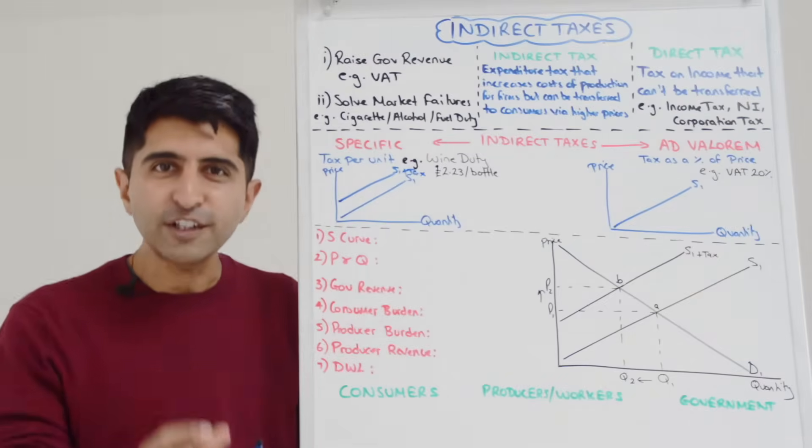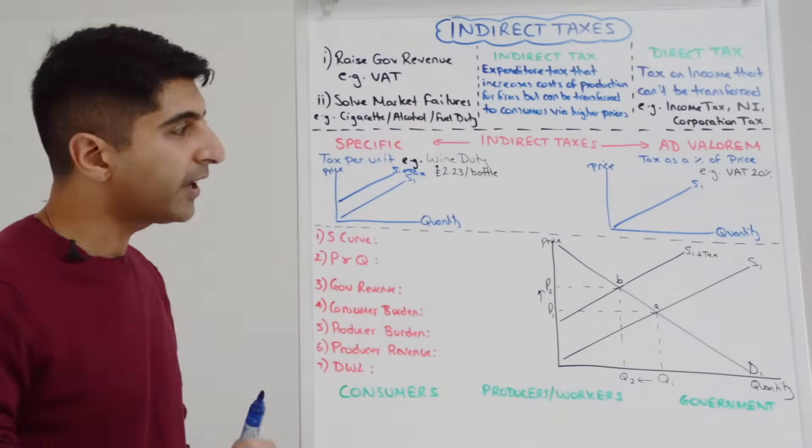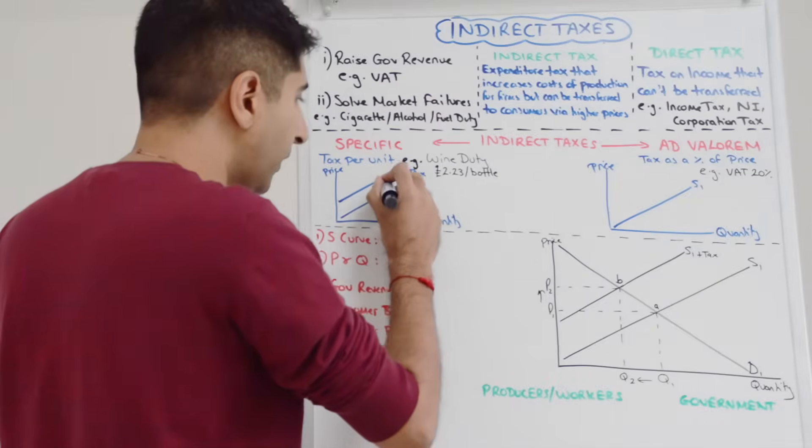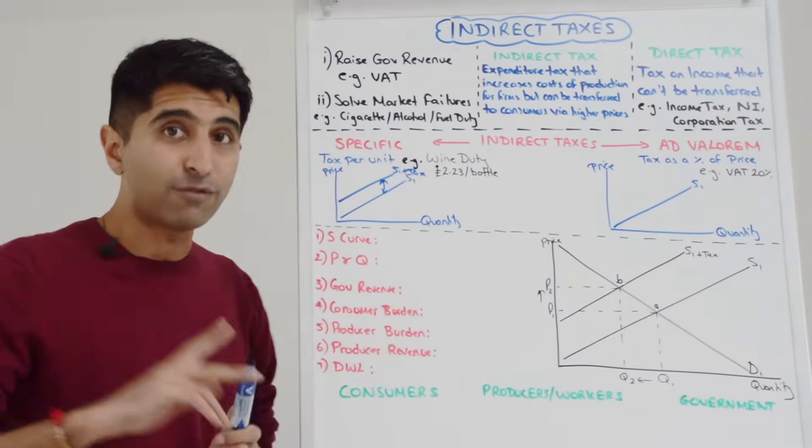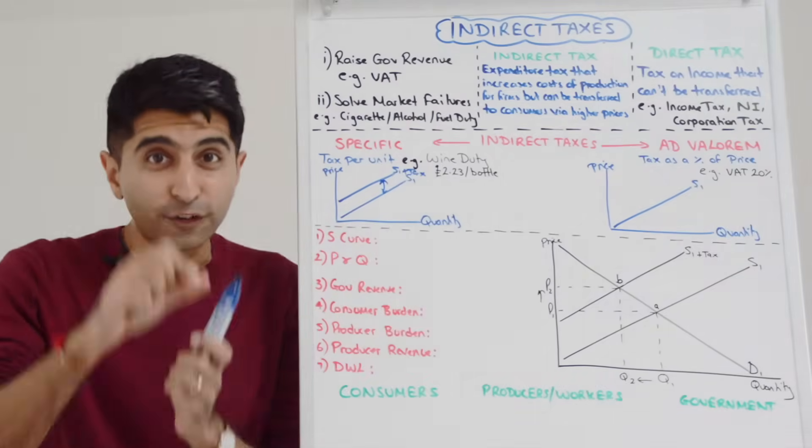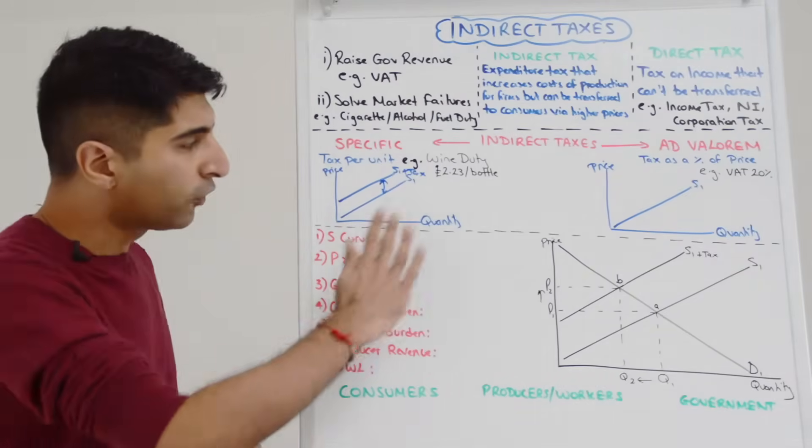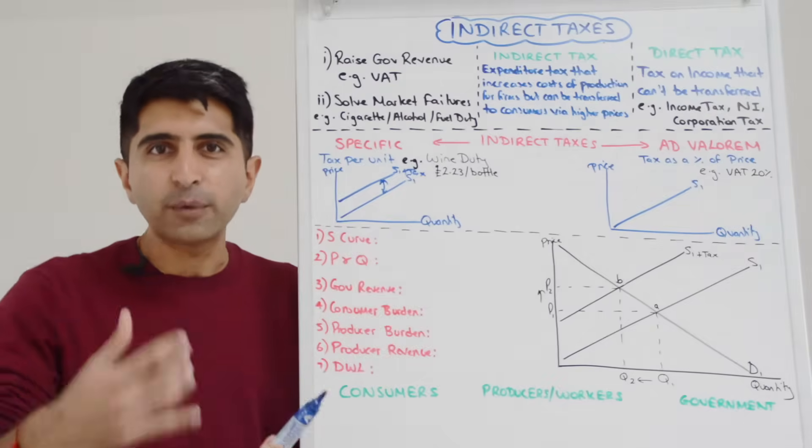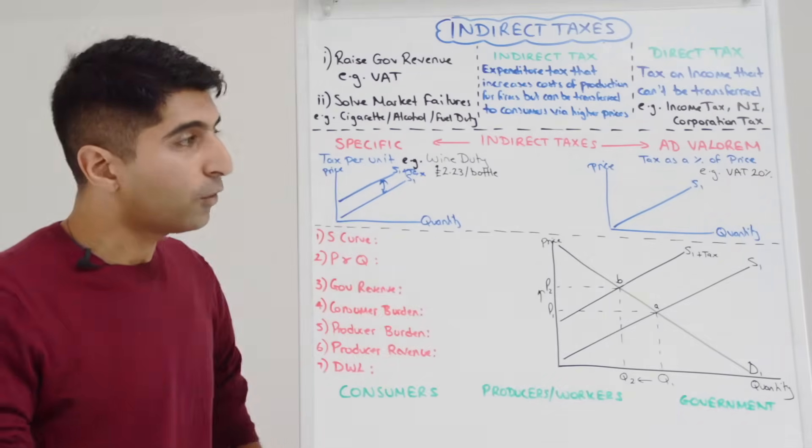That is because the vertical distance between the two supply curves represents the value of the tax. So in this situation the vertical distance here represents the fact that the tax is £2.23 per bottle.